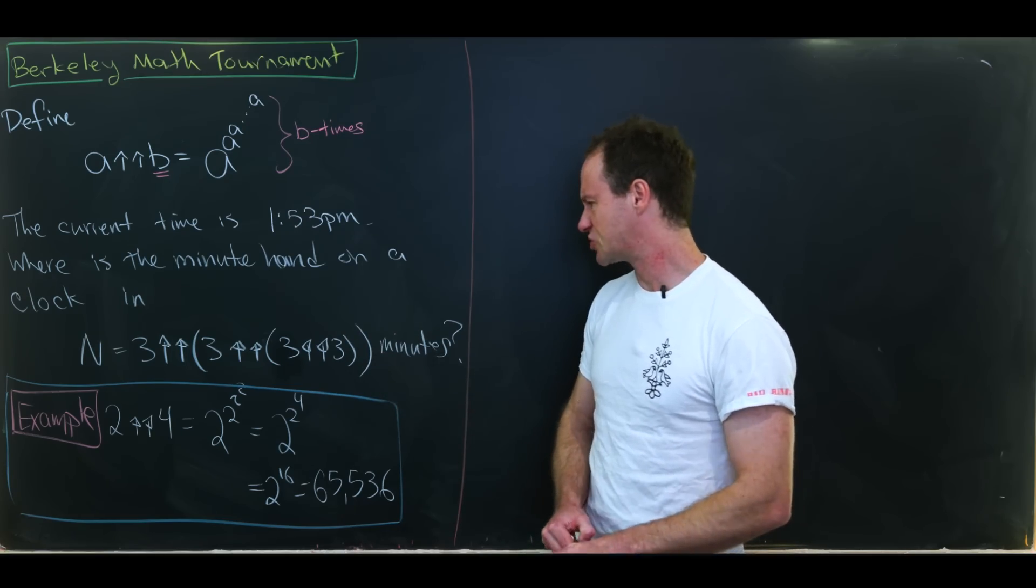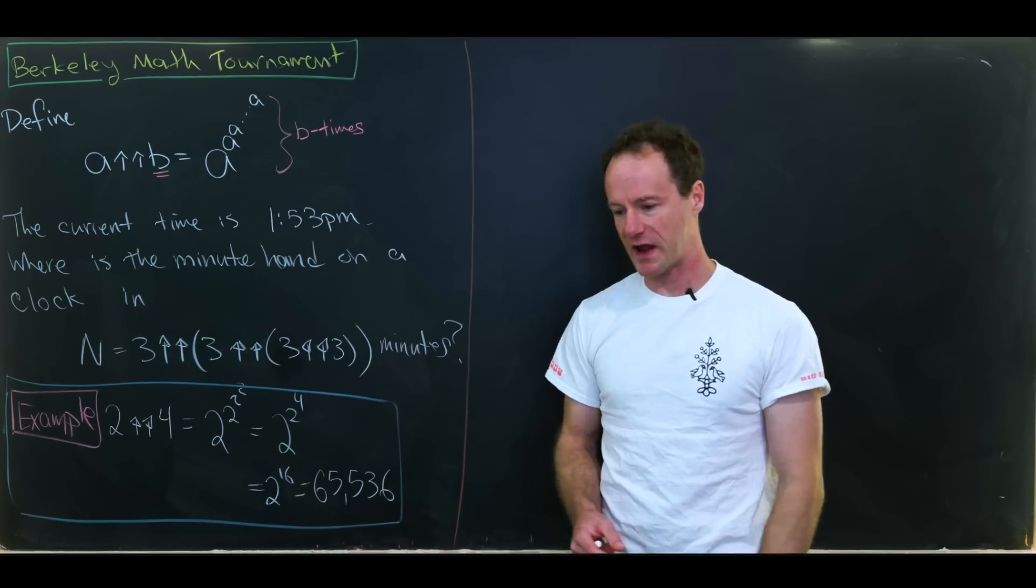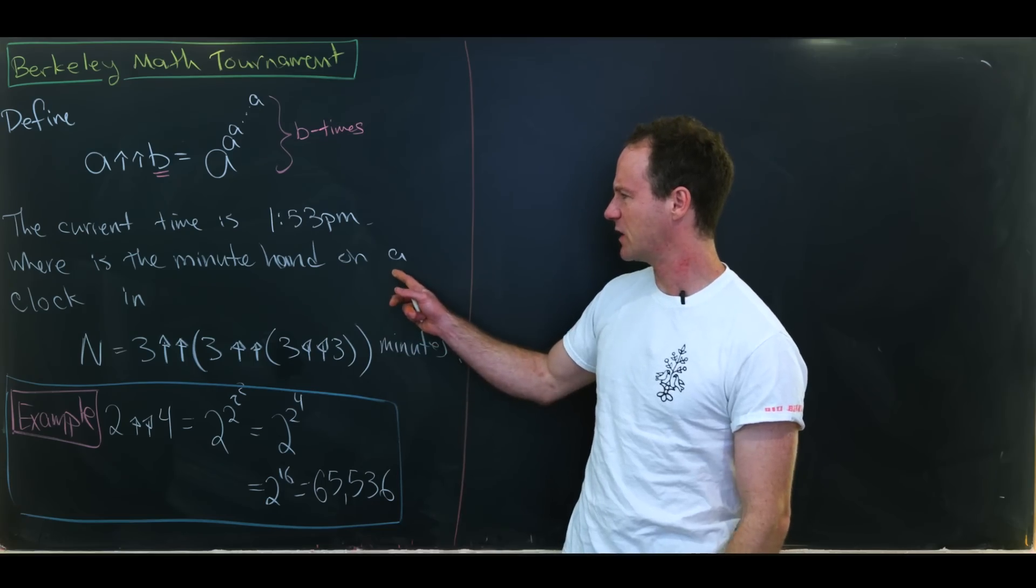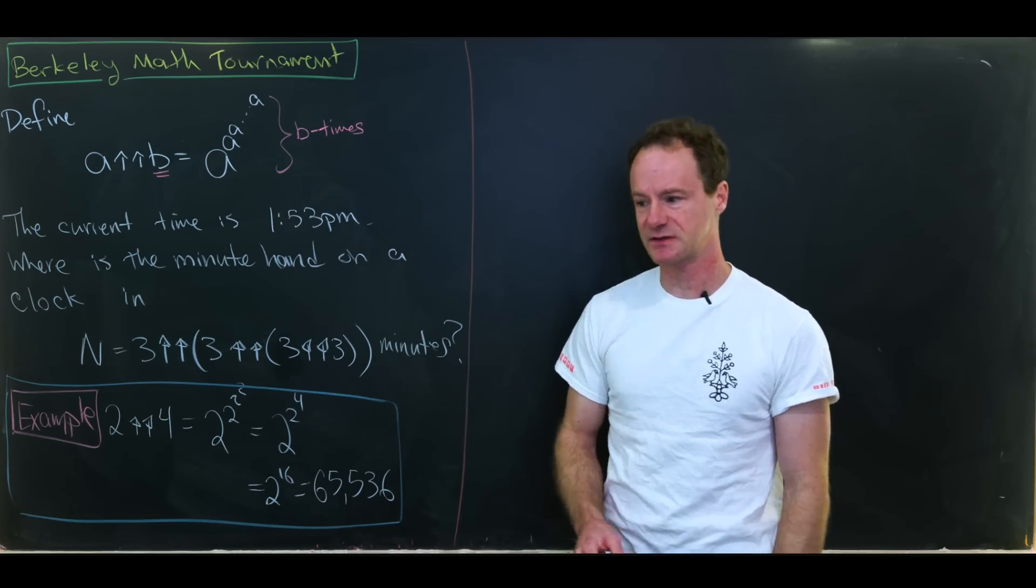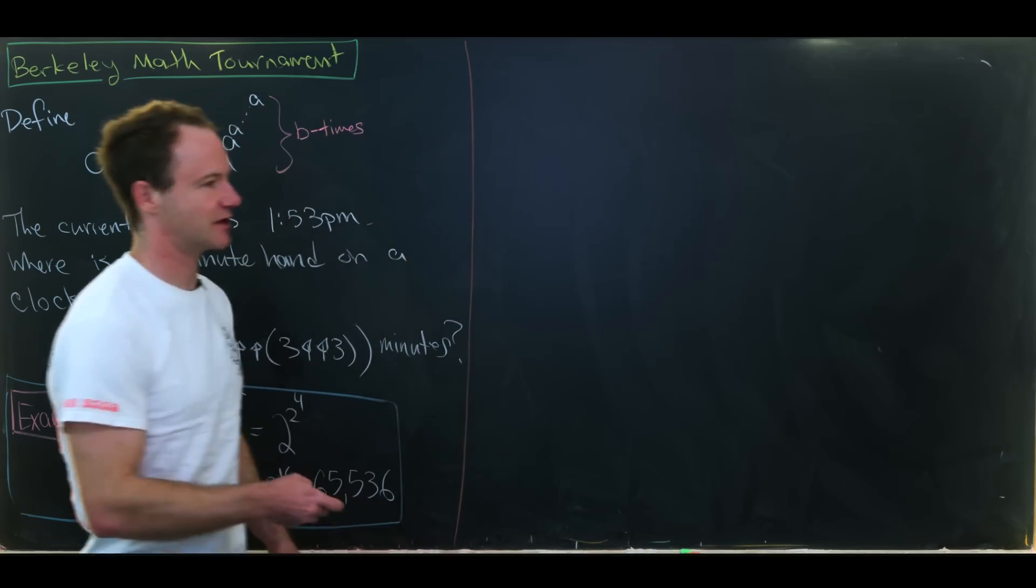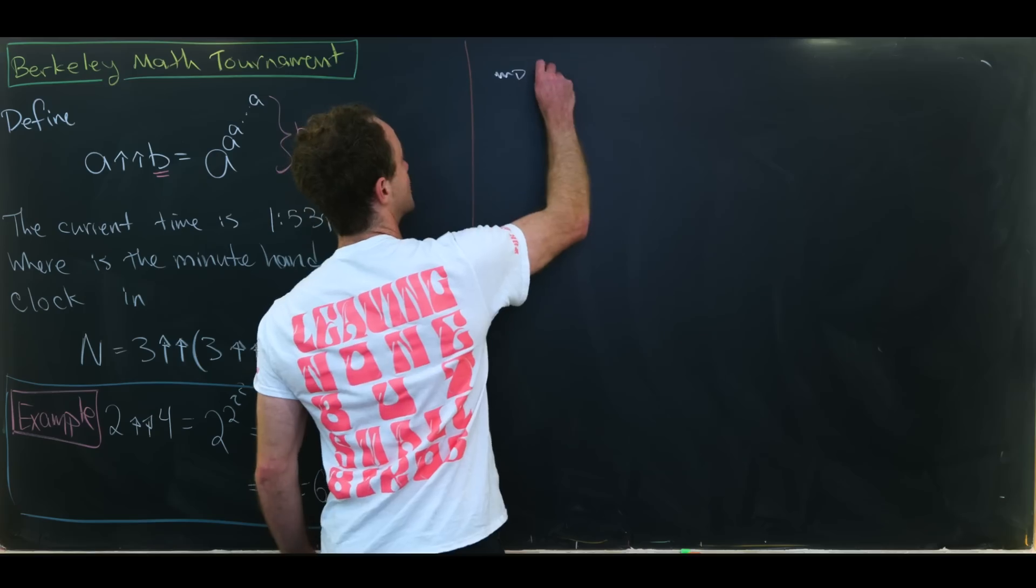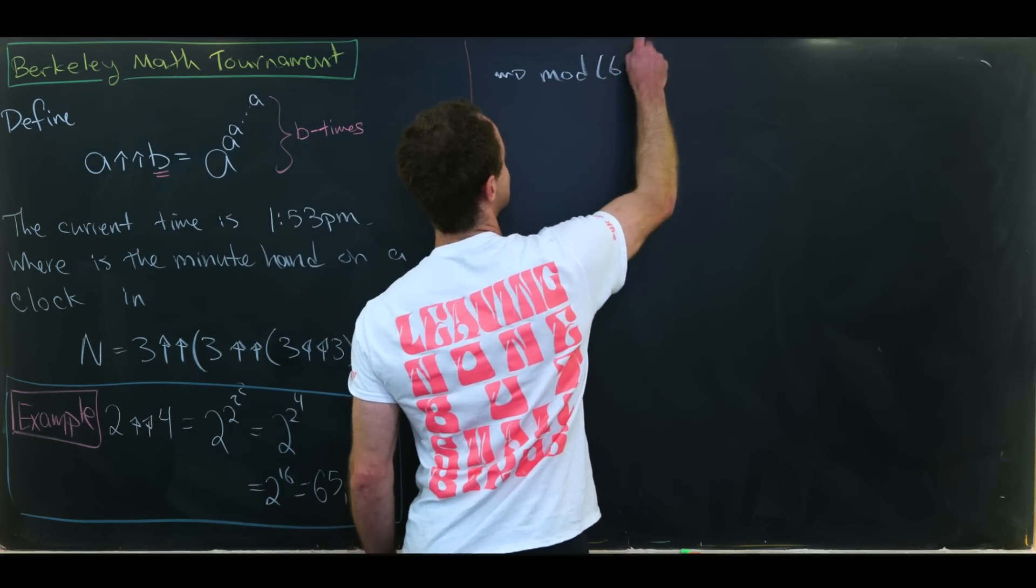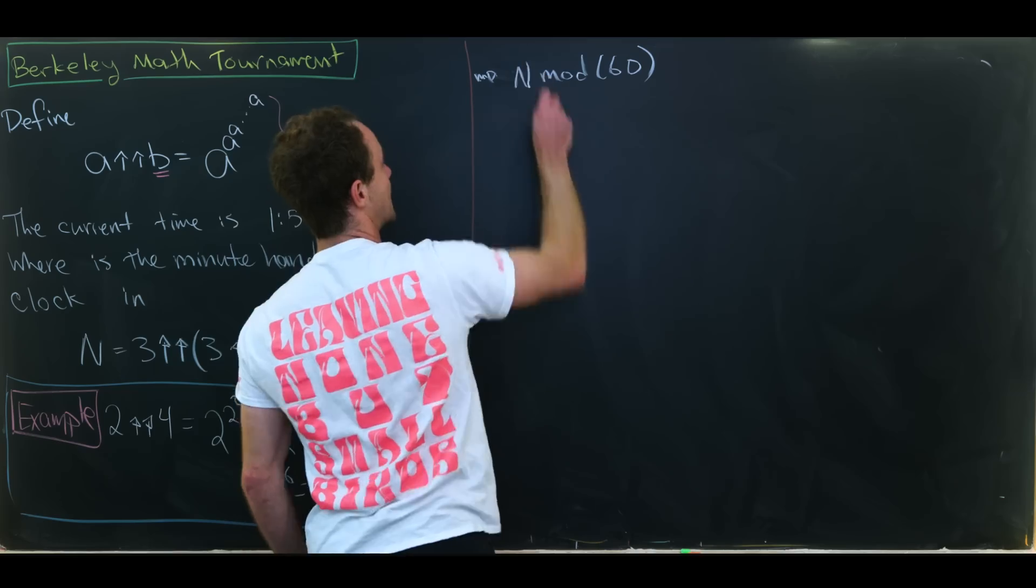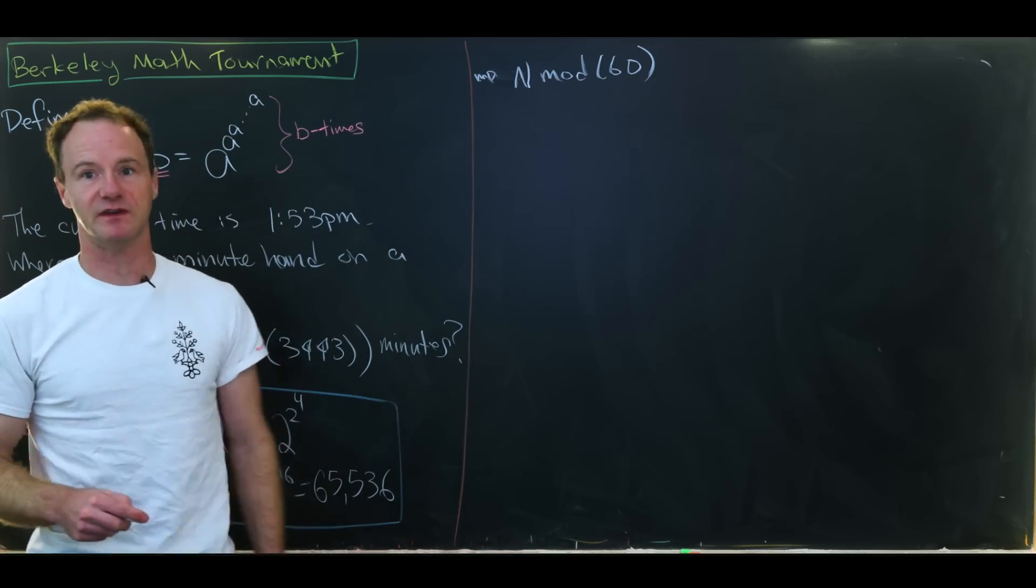So let's maybe start by looking at what's going on in this inner parentheses and then we'll work our way out. But really like how is this going on? We want to know where the minute hand is and the minute hand repeats after every 60 minutes. So that gives us some motivation to look at this whole thing mod 60. In other words we'd like to calculate N mod 60 as a number between 0 and 59.